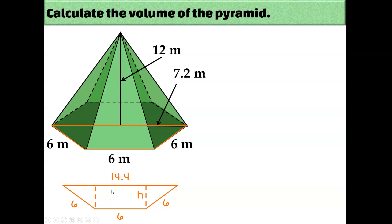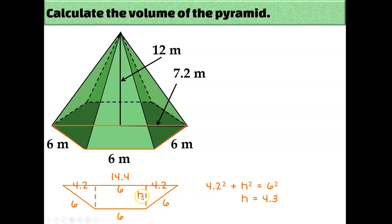In order to calculate the area of this trapezoid, we need to know the height. To calculate the height, we're going to need to break the 14.4 base into pieces. One piece has to be 6, because the shape in the center of the trapezoid is a rectangle. If I take 6 away from 14.4, I get 8.4, and divide that evenly amongst the two little segments, and I find out they're each 4.2. So to calculate the height, I do 4.2 squared plus h squared equals 6 squared, and we find out that the height is 4.3.